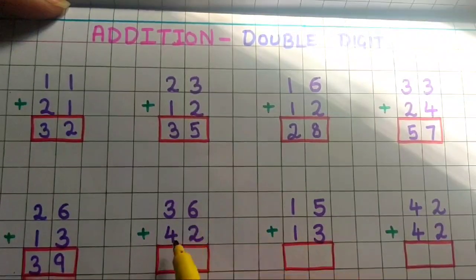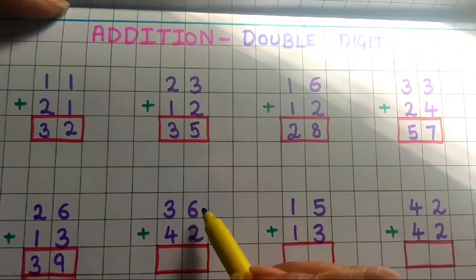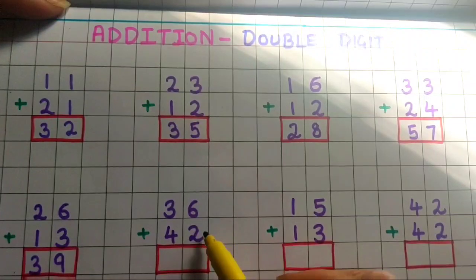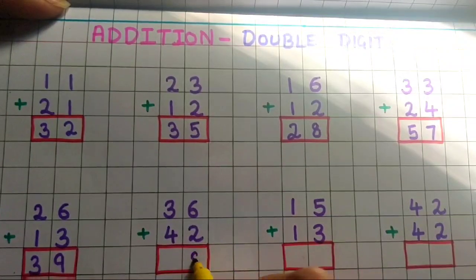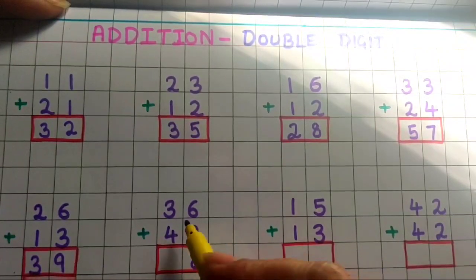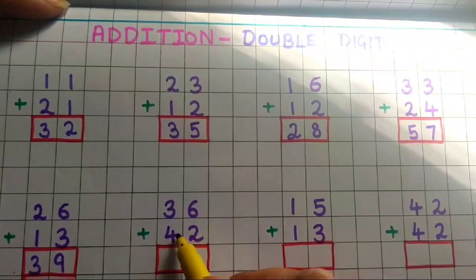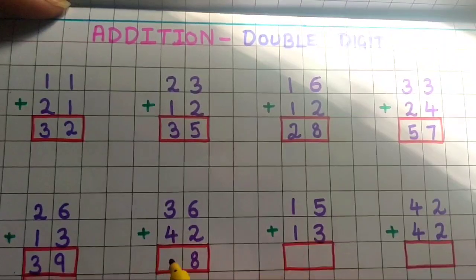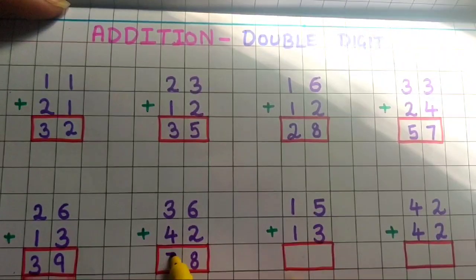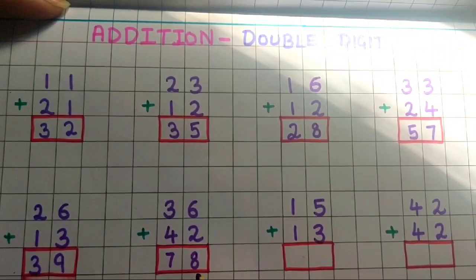36 plus 42. So 6 plus 2 is 8, and 3 plus 4 is 7. So the answer is 78.